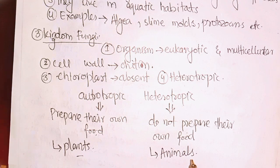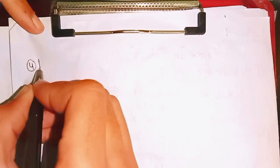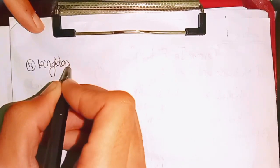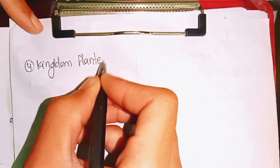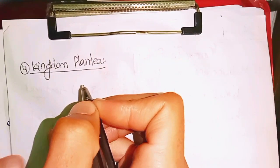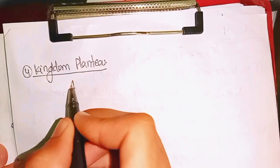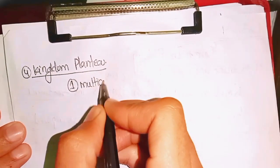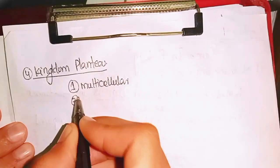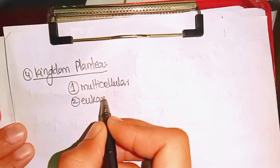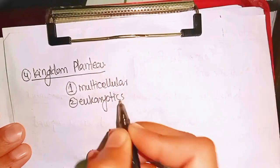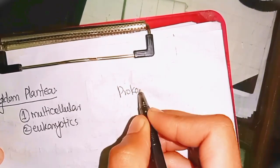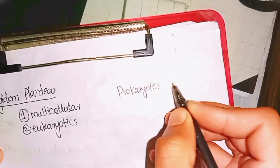The next kingdom is Kingdom Plantae. Kingdom Plantae characteristics: these organisms are multicellular and eukaryotic, meaning they have membrane-bounded organelles. Unlike prokaryotes, they have membrane-bound organelles throughout their body.